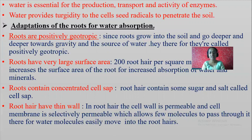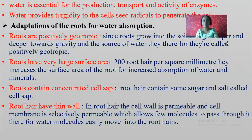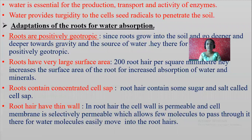Roots have a very large surface area. Roots spread throughout the surrounding land underground. There are 200 root hairs per square millimeter — just imagine 200 root hairs per square millimeter — which increases the surface area of a root for increased absorption of water and minerals. If the surface area is more, automatically the absorption rate will be more.